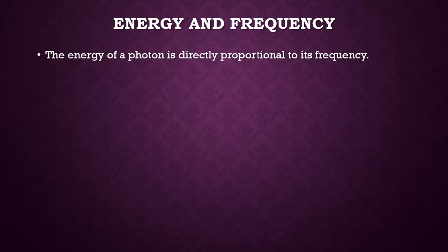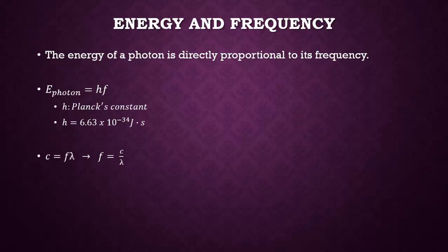The energy of a photon is directly proportional to its frequency. This relationship is apparent in the equation E_photon = hf, where E_photon is the energy of the photon, f is the frequency, and h is Planck's constant. You can find this value on the reference table — it's 6.63 times 10 to the negative 34 joule-seconds. Since f is equal to c over lambda, the energy of the photon could also be written as E = hc over lambda.